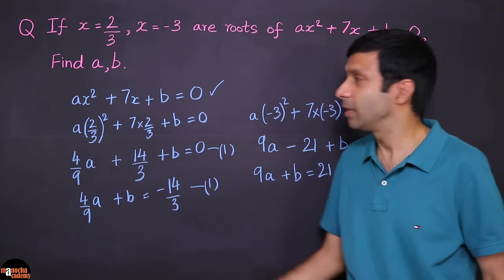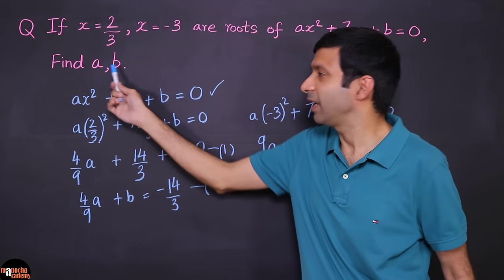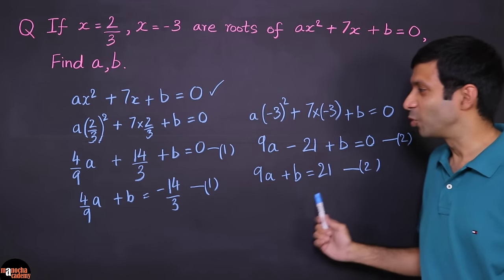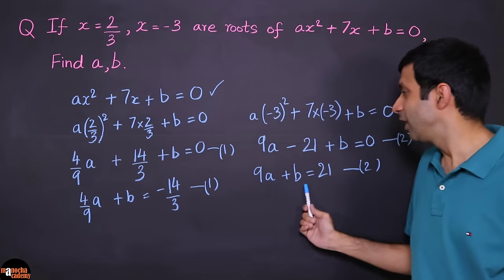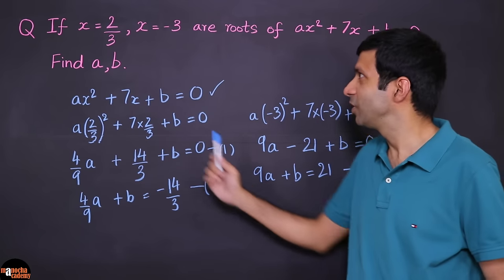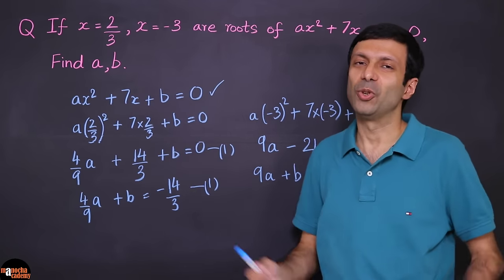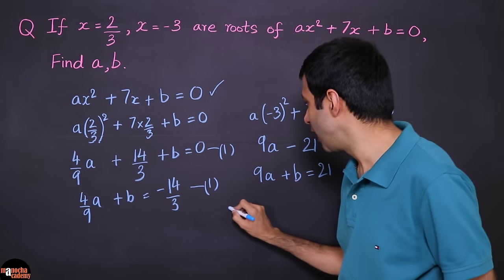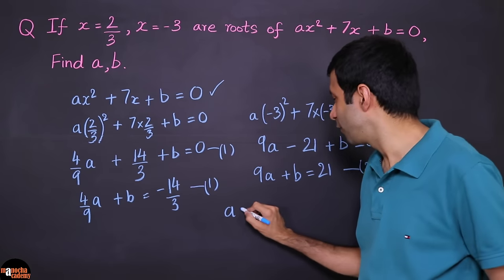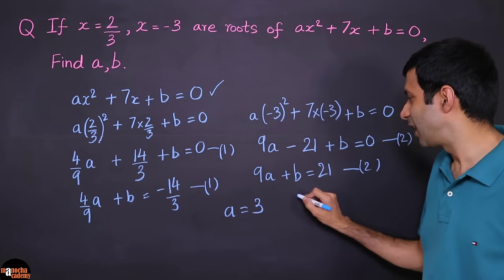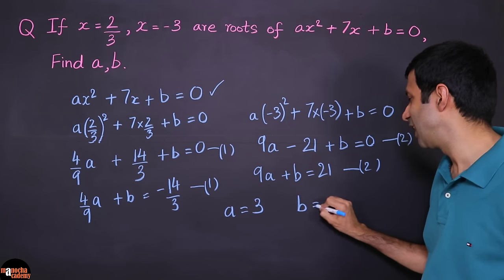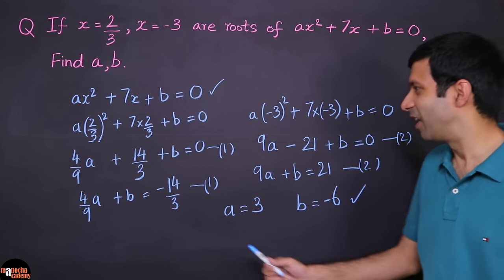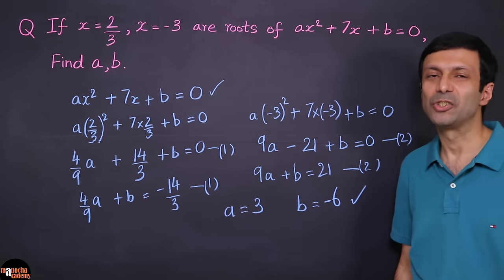Solving these two equations, you're going to get A = 3 and B = -6. Try this out yourself — solving the pair of linear equations gives us that answer.